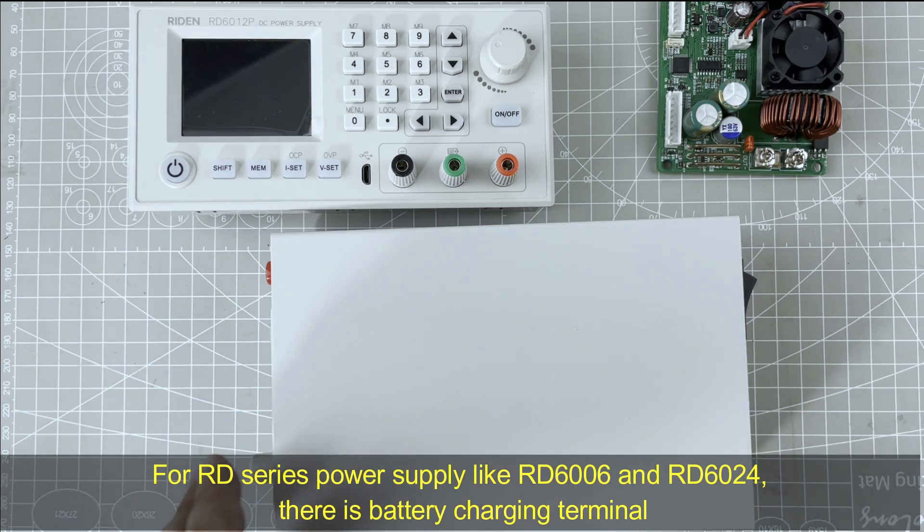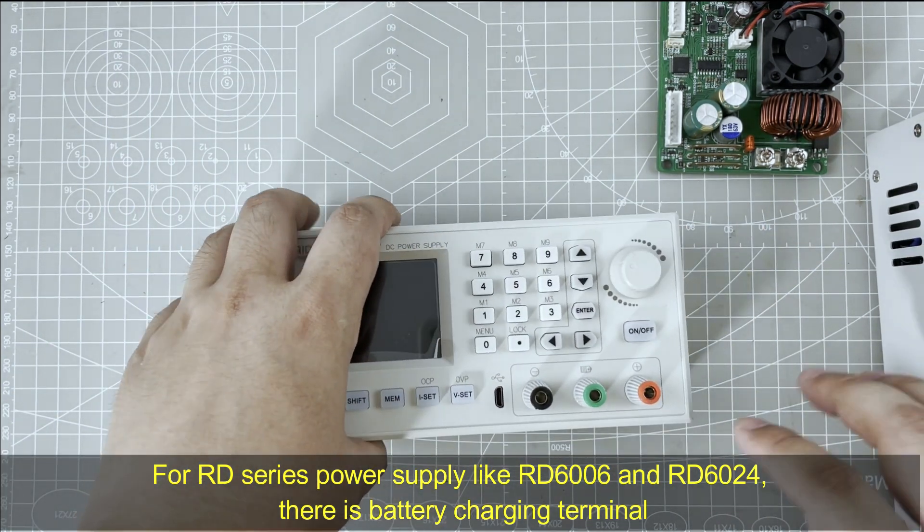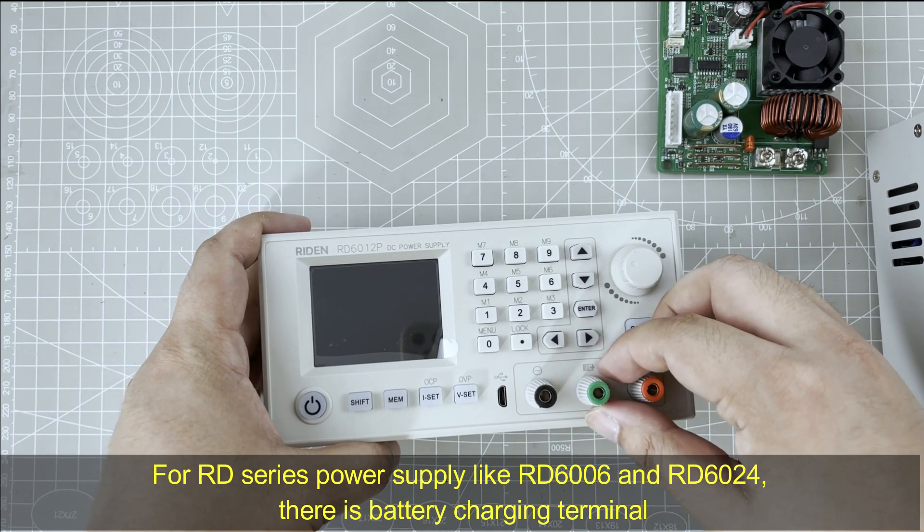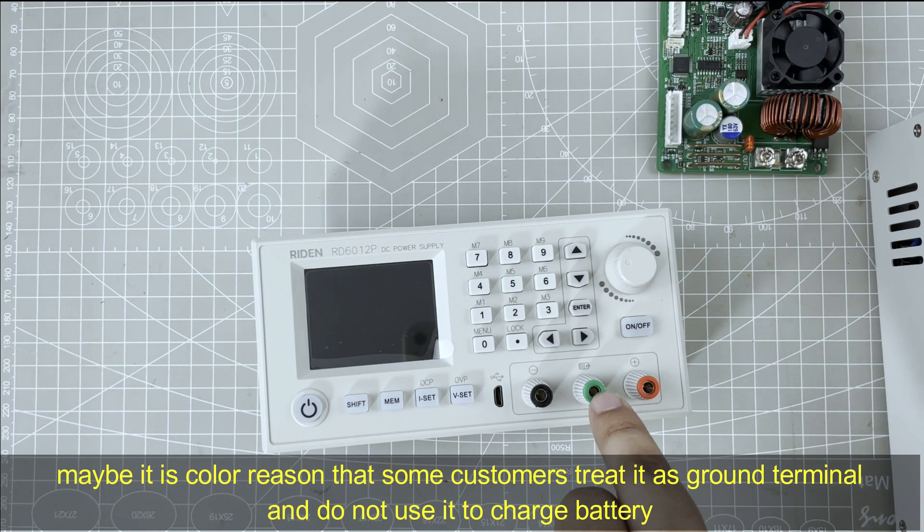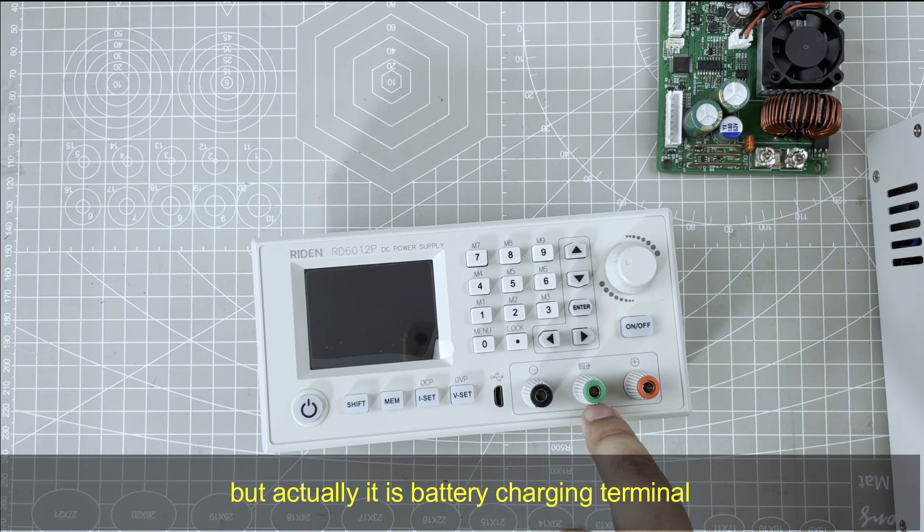For RD series power supply, you can see here it is a battery charging terminal. Maybe due to the color, some customers mistake it as ground terminal, so they do not use it for battery charging. But actually, it is used to charge battery.